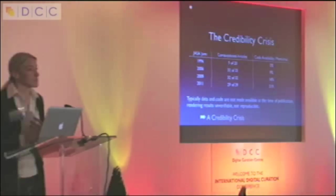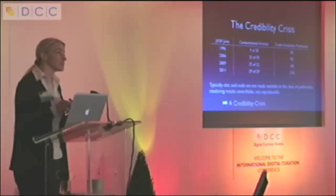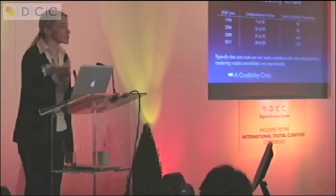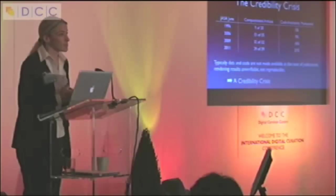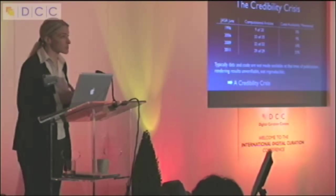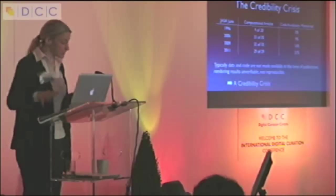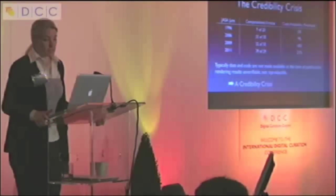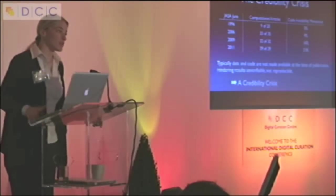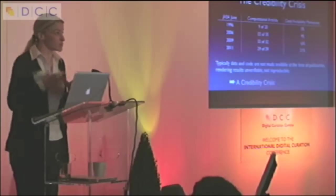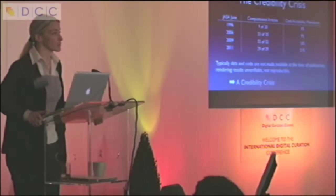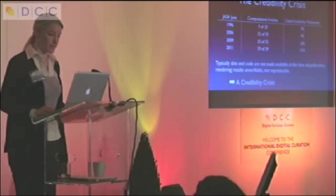Code and data not made available at the time of publication — we're facing a credibility crisis. University of East Anglia was mentioned this morning. You can interpret ClimateGate as a failure to communicate the methods, the underlying data and how the results were actually produced. That's something that certainly permeated into public consciousness. There was a clinical trial scandal at Duke University last year causing one professor to resign. The work that had gone to clinical trial was based on computational work that could not be reproduced.